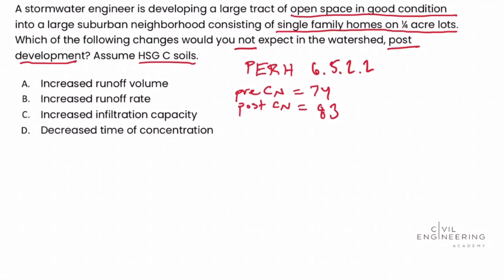We know that a higher curve number is equal to higher runoff. Using this information, we'll evaluate each of our answer choices to determine the correct answer — again asking what we would not expect in the watershed post-development.